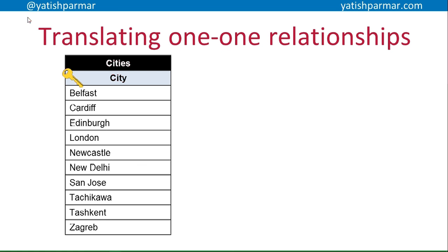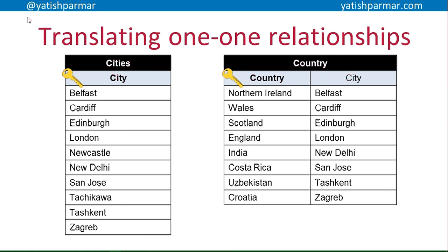Looking at examples: in a geographical database, I'm storing different cities in a cities table where the primary key is the city name. I then have a country table where the primary key is the country name, and there is a city field that is a foreign key in the country table and a primary key in the city table — a one-to-one relationship — because any country can only have one city as its capital city. One-to-one relationships tend to be quite rare.